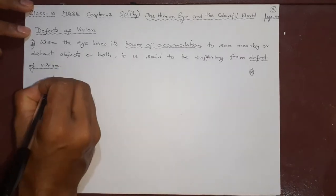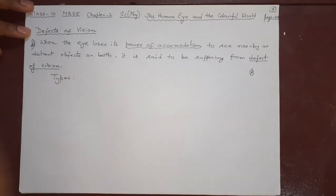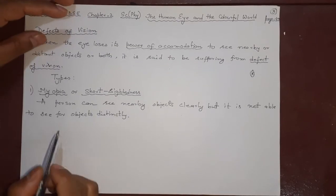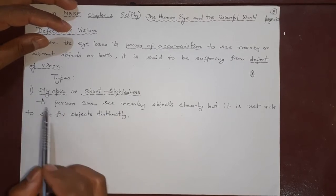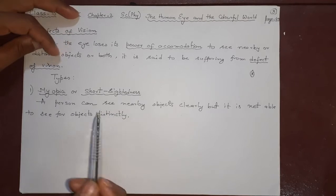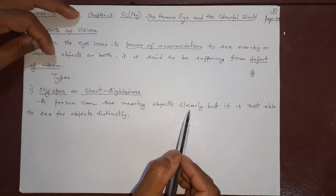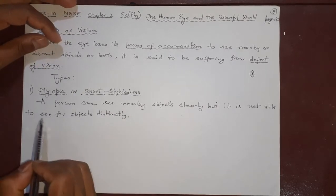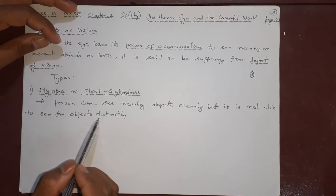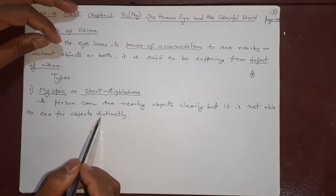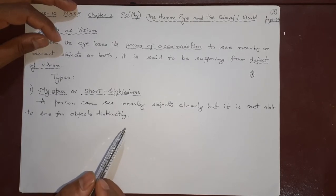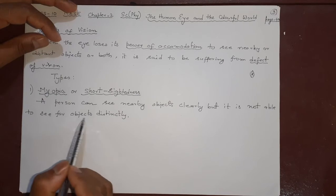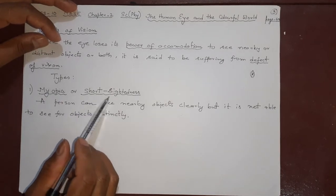So what are the types? Number one, this type of defect is called myopia or short-sightedness. A person can see nearby objects clearly but is not able to see far objects distinctly. You have to see things at a distance distinctly — only then is it said that your eyes are totally good. If it is not able to see far objects distinctly, this is called myopia or short-sightedness.